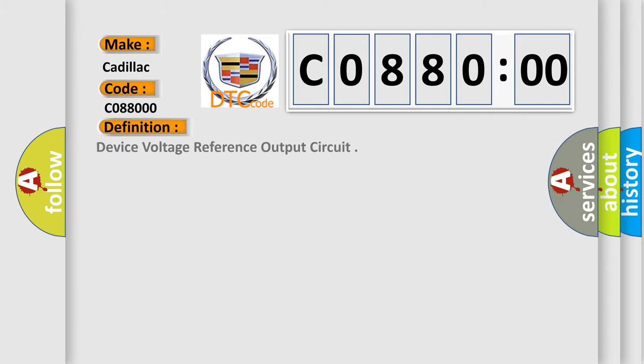The basic definition is device voltage reference output circuit. And now this is a short description of this DTC code.